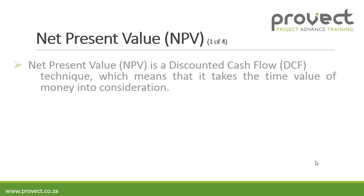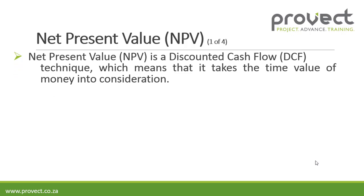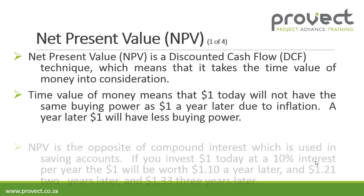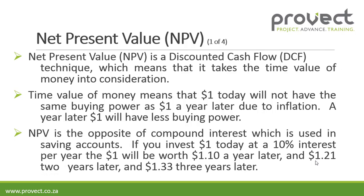The net present value is a discounted cash flow technique, which means that it takes the time value of money into consideration. The time value of money means that one dollar today will not have the same buying power as one dollar a year later due to inflation. Net present value is the opposite of interest in a savings account: if you invest one dollar today at 10 percent interest per year, the one dollar will be worth $1.10 a year later, $1.21 two years later, and $1.33 three years later.